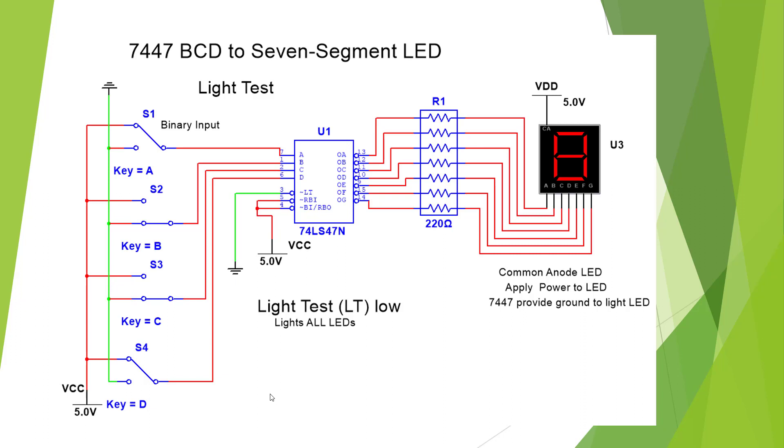Here's our 7447 BCD to 7 segment LED decoder connected to our 7 segment in the light test mode. So if we tie pin 3 light test, LT means light test, we will test all the LED segments in our display and we should get an 8. It'll ignore all inputs and just display the 8.